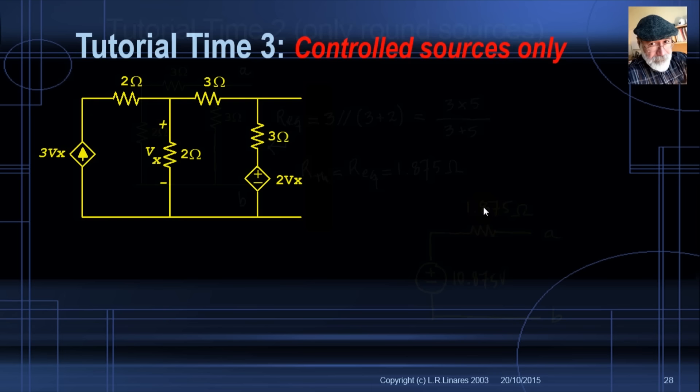Tutorial 3 — this circuit has only controlled sources. When there is no independent source in the circuit, all voltages and all currents are zero, because there is no initiator. So VOC must be zero.